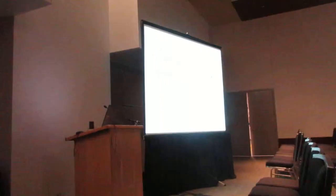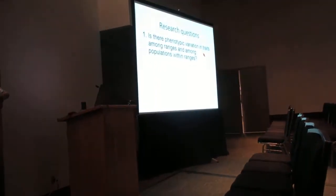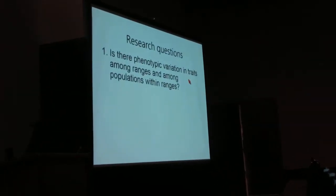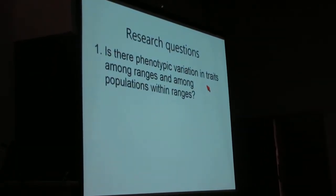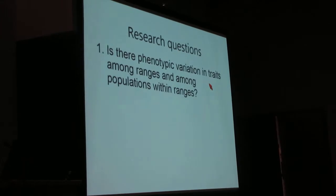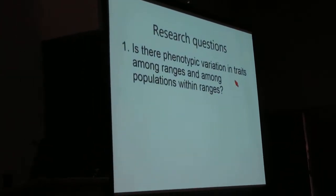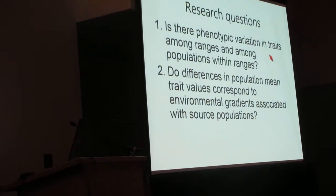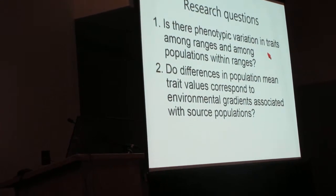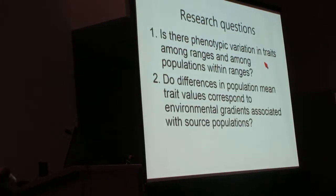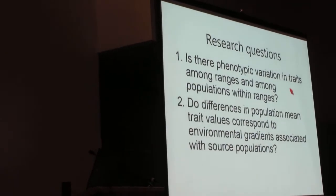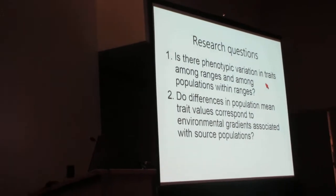To guide my work, I ask two main questions. My first question is pretty straightforward: Is there phenotypic variation in traits among ranges and among populations within ranges? My second question is, do differences in population mean trait values correspond to environmental gradients associated with source populations, these locations where I collected these plants?